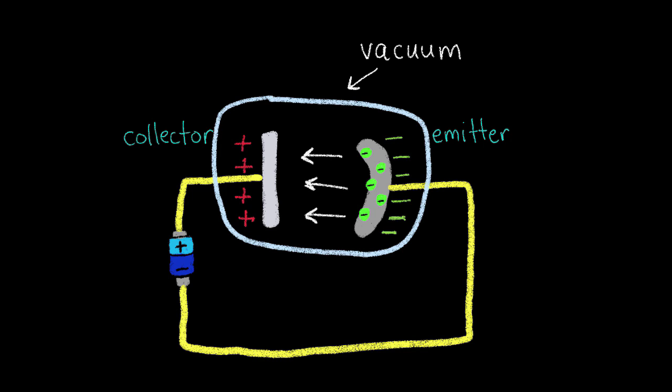Of course, if the electrons were to somehow break free of their metal prison, they would jump the gap no problem. But first, they need to be given enough energy. This is where our light source comes in.